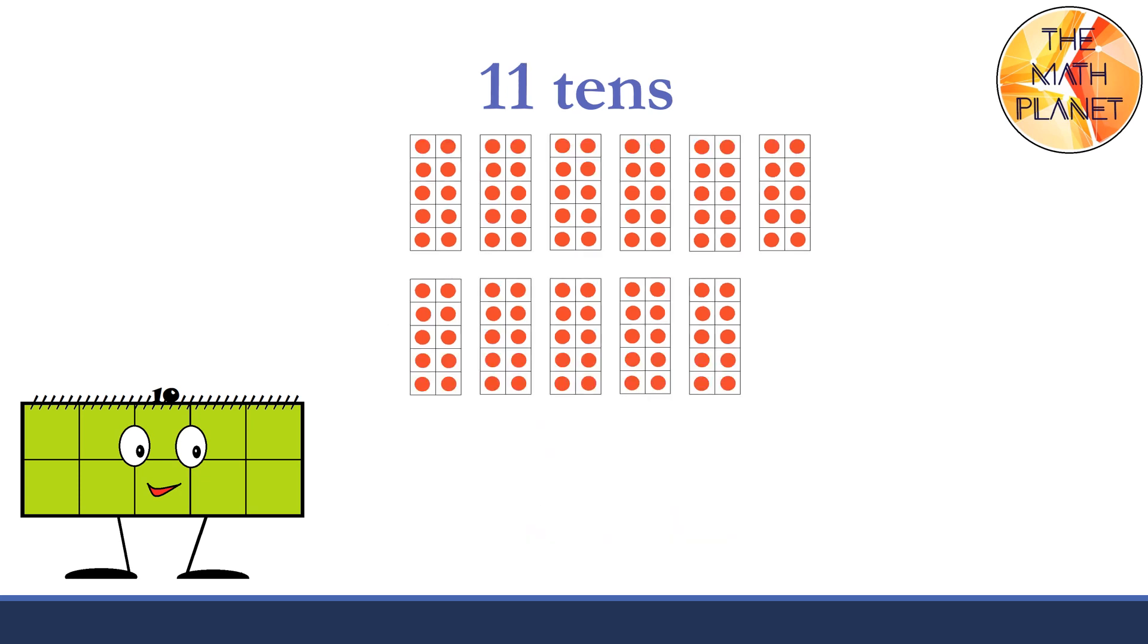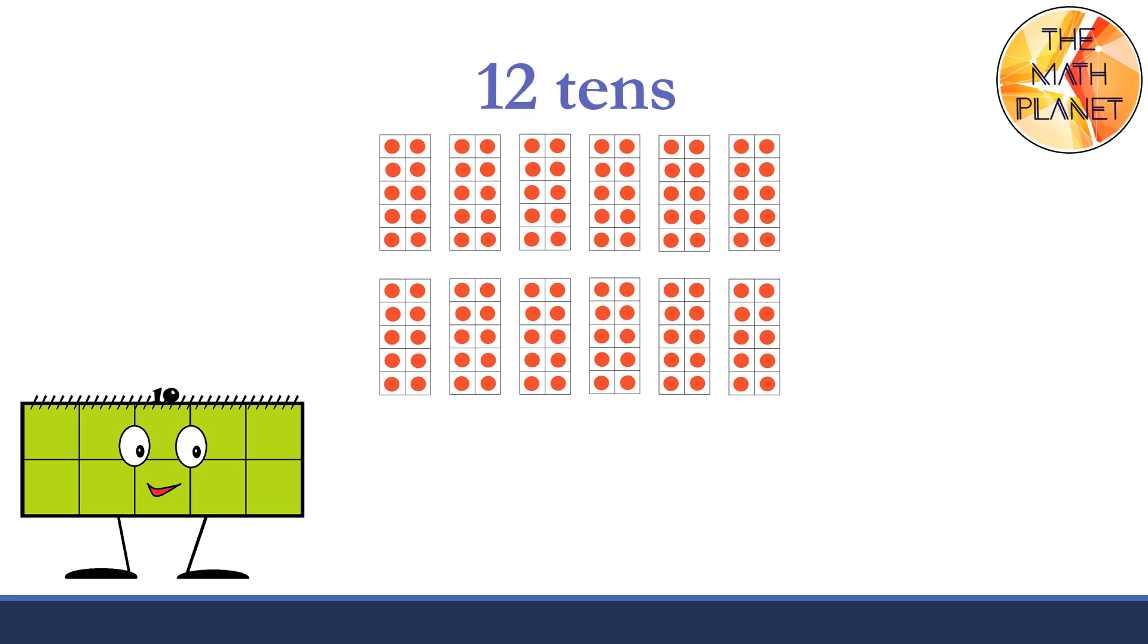Eleven groups of tens make 110. One O-N-E-H-U-N-D-R-E-D, 10 T-E-N, 110. Twelve tens make 120. One O-N-E-H-U-N-D-R-E-D, 20 T-W-E-N-T-Y, 120.